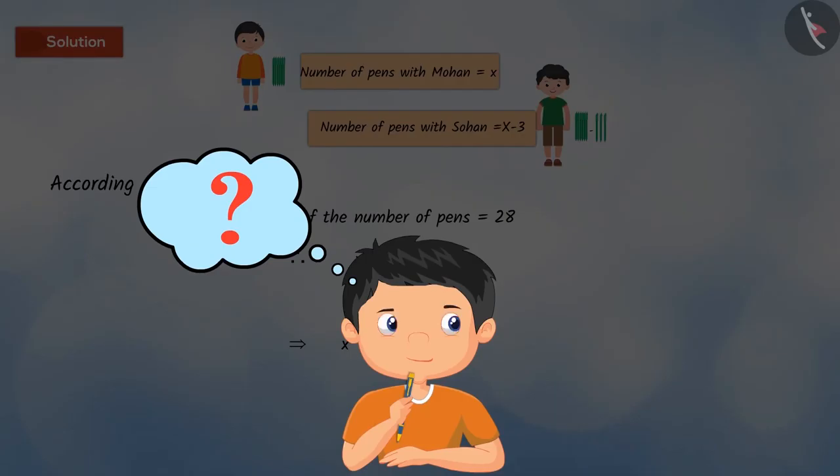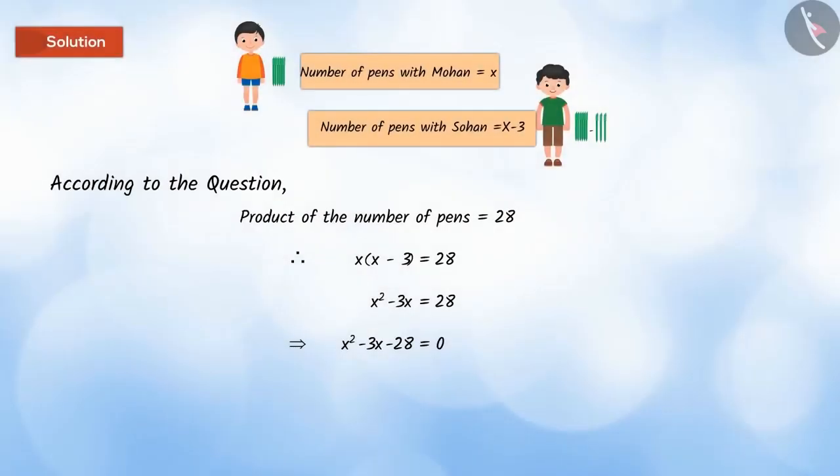Can you guess how to begin with the solution? Correct. First we have to compare this equation with the standard form of the quadratic equation, which gives us the values of A, B and C.